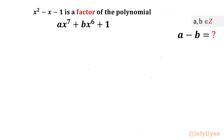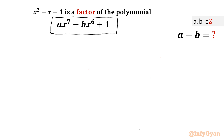Welcome back to InfiGaN friends. In this video we are going to take up one very challenging question from Math Olympiad, Ecuador 2017. The question is: x squared minus x minus 1 is a factor of the polynomial ax to the power 7 plus bx to the power 6 plus 1. We have to evaluate the expression a minus b, given that a and b are integers.